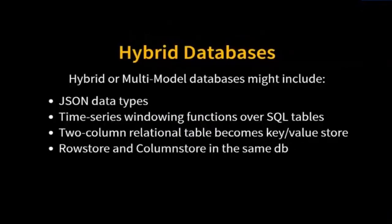Hybrid databases: we've looked at a lot of different types of data stores and seen pros and cons in each. What if I want something that can do lots of things? What if I have a relational database but also a JSON column that allows document data processing? What if I have a time series windowing function inside my SQL database? Hybrid databases are really elegant and they start to expand our views beyond just the single type we're looking for.